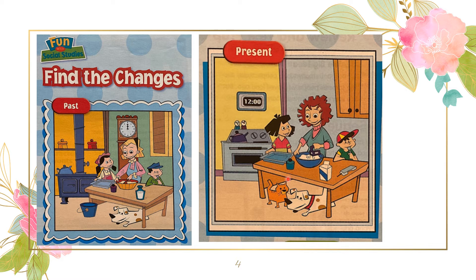Let's spot the differences. The way people are dressed is different — the style of their clothes has changed from past to present. There's also a difference in the stove and the kettle. The clock is different too — people used an analog clock long ago, but now we use digital clocks. The mom in the past picture is using a manual mixer by hand, while in the present there's an electric mixer.